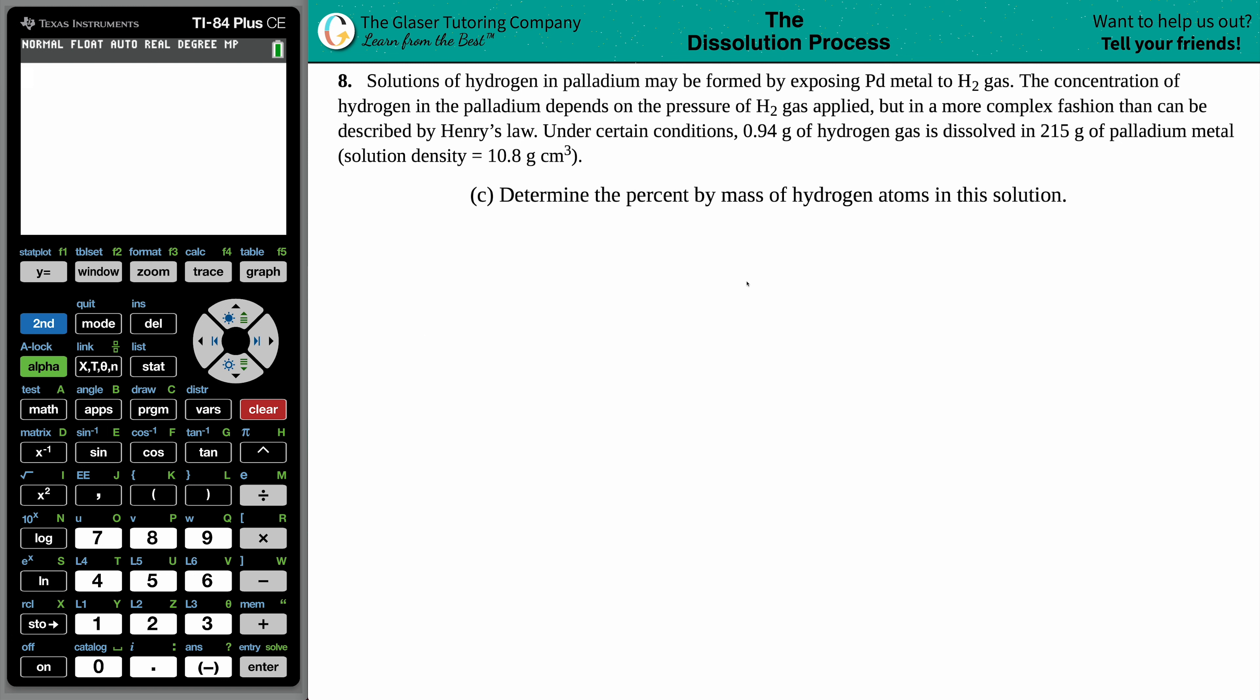Problem 8: Solutions of hydrogen in palladium may be formed by exposing Pd metal to H2 gas. The concentration of hydrogen in the palladium depends on the pressure of H2 gas applied, but in a more complex fashion than can be described by Henry's law. Under certain conditions, 0.94 grams of hydrogen gas is dissolved in 215 grams of palladium metal, and the solution density is 10.8 grams per centimeter cubed. For this question, we have to determine the percent by mass of hydrogen atoms in this solution.